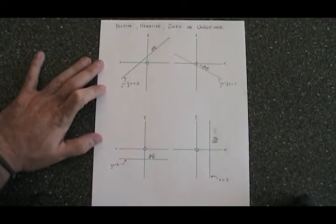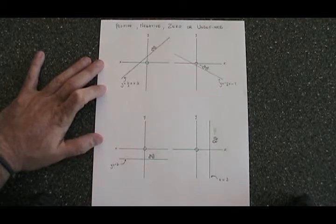All straight lines have a slope that is either positive, negative, equal to zero, or undefined.